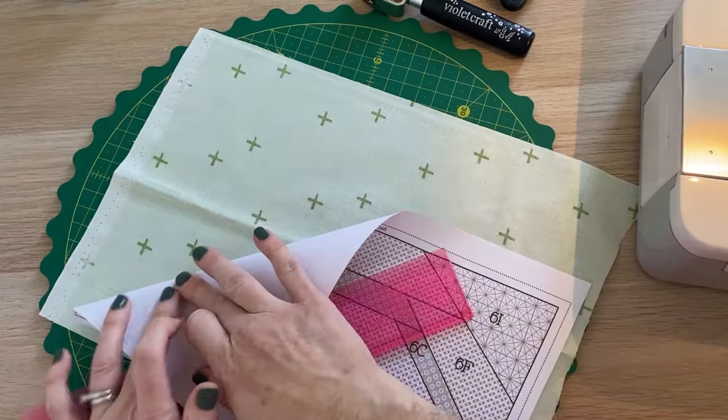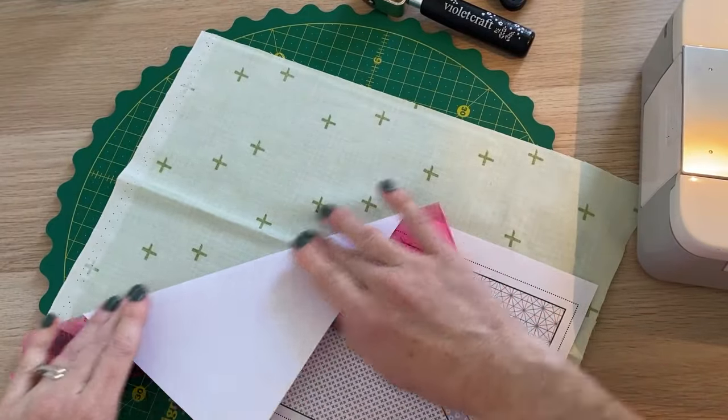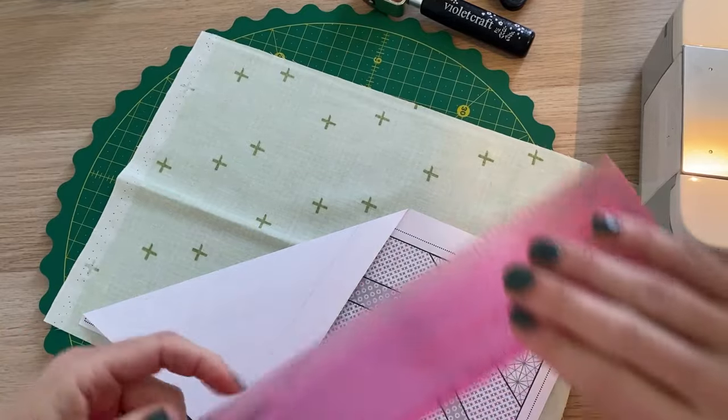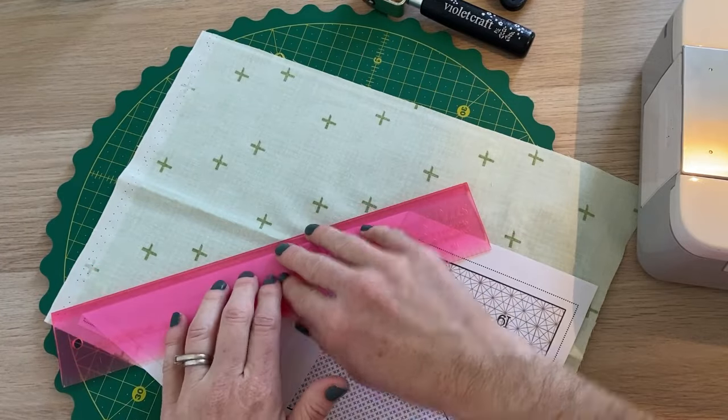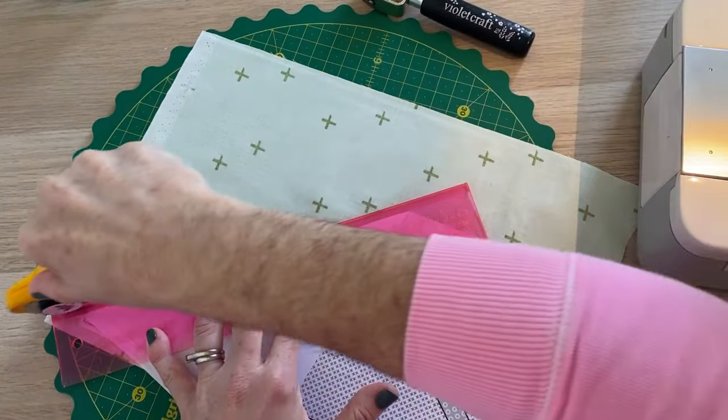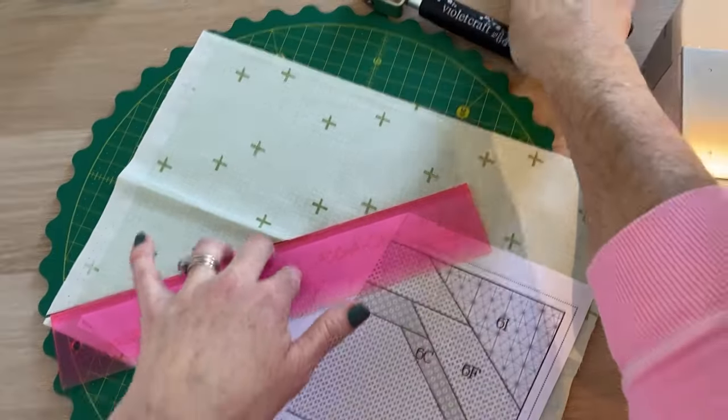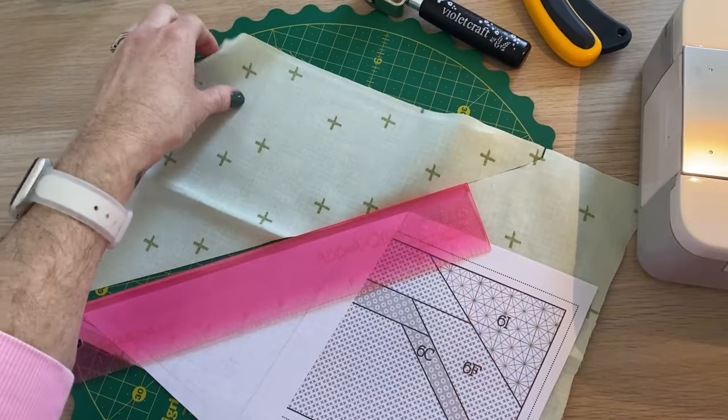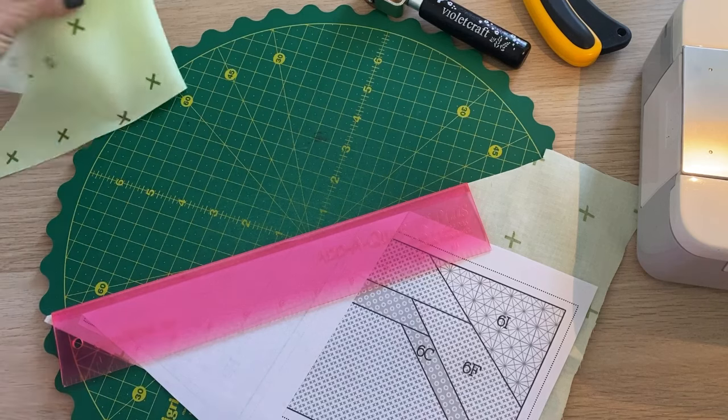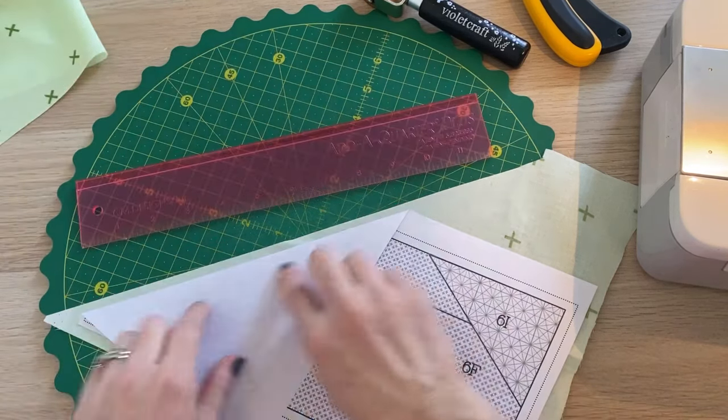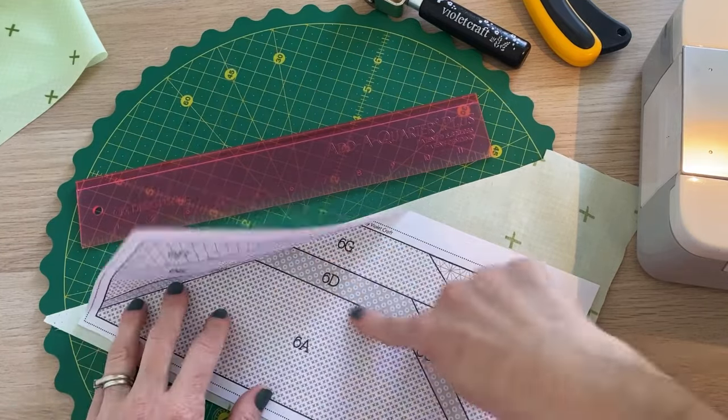So I'm using an add-a-quarter plus ruler. It's got that fine edge that gives you a nice crisp fold. And then this has a quarter of an inch lip right here. So you just go on and we're going to cut all of this away. I ran off my mat a little bit there. This is just a scrap we put to the side and use for later. So this is our seam allowance. Our quarter of an inch seam allowance bigger than our piece.